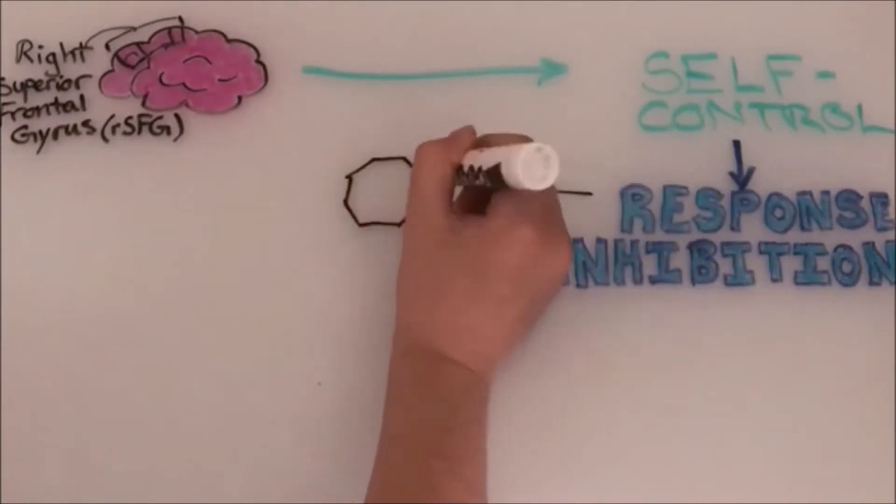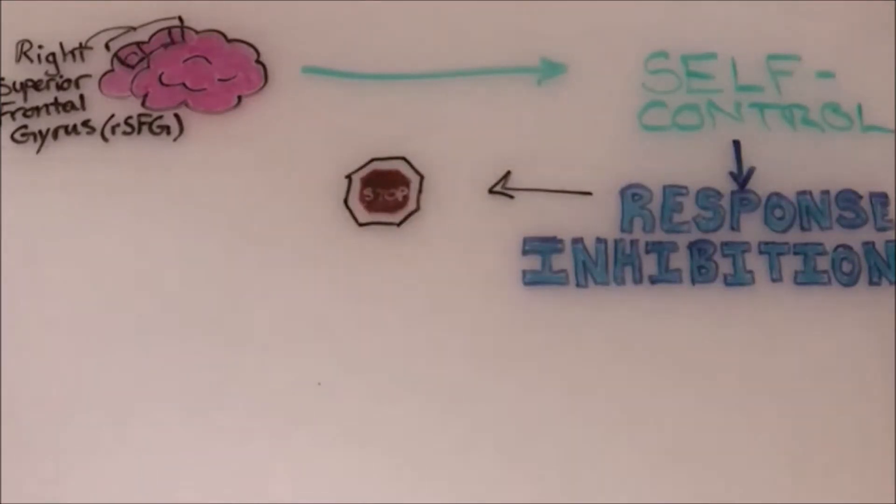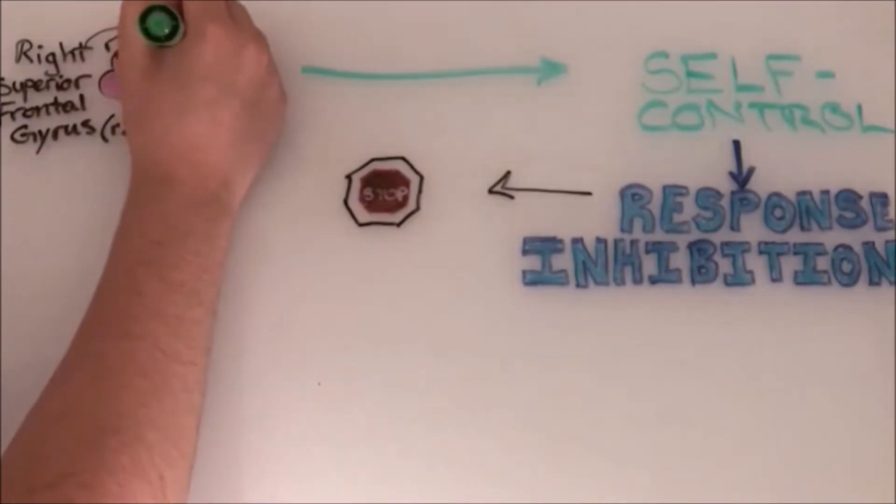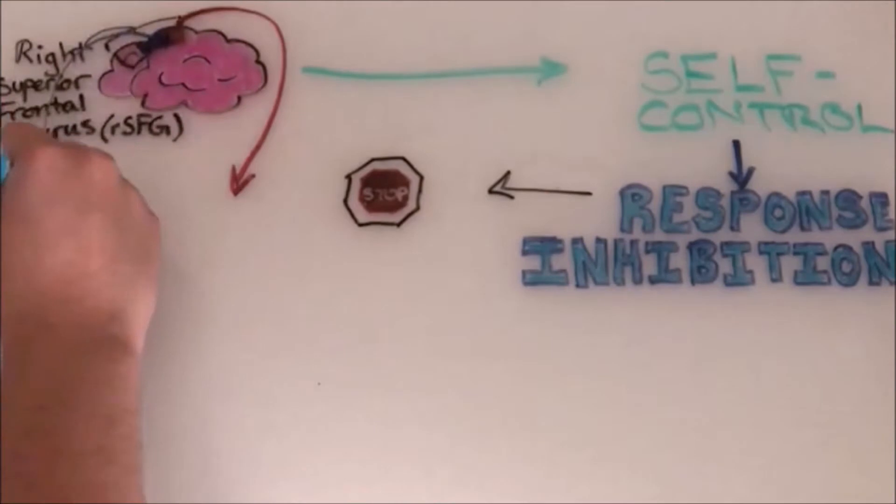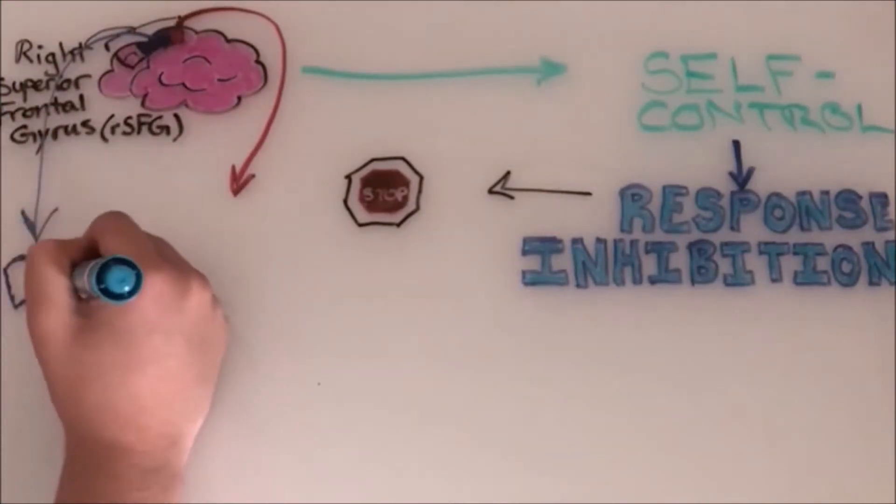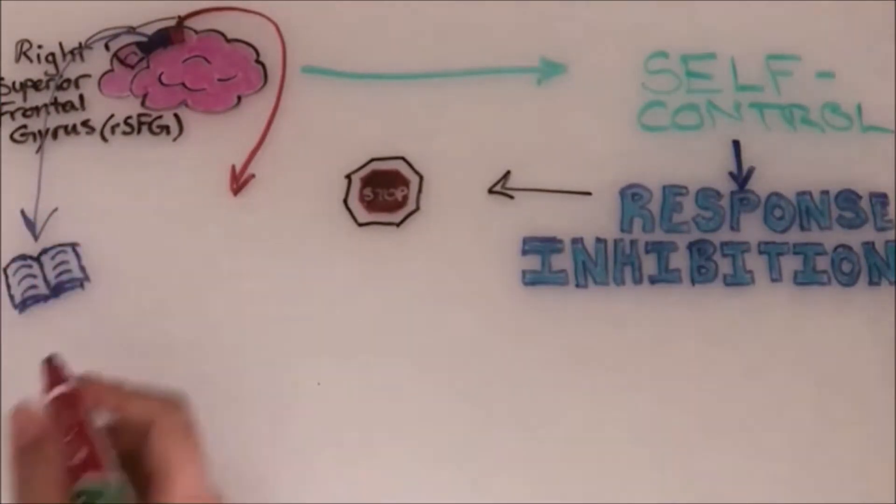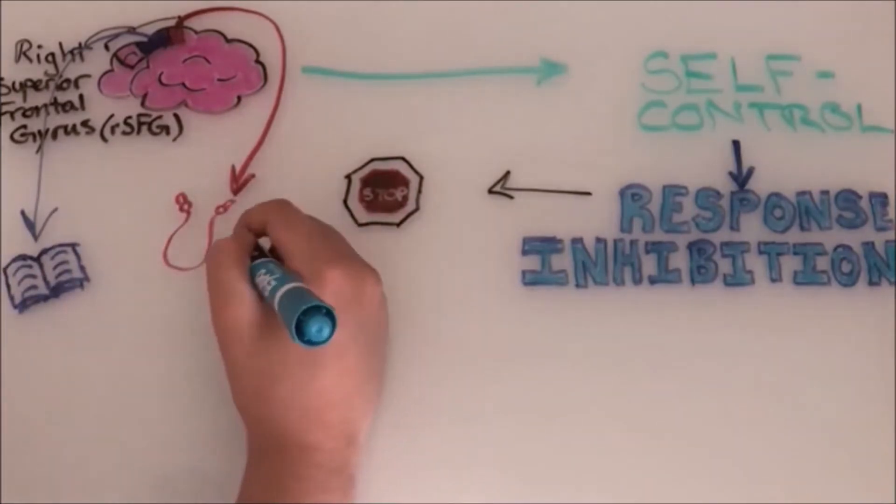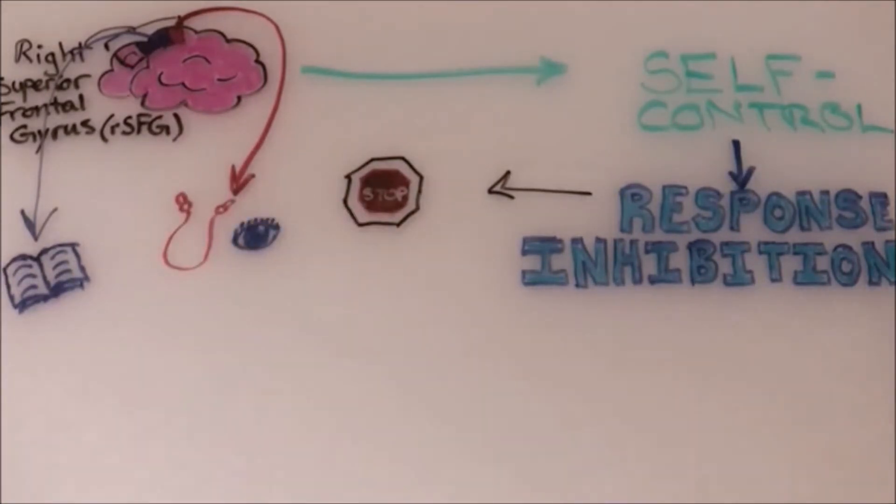There are two parts of the RSFG that may help put a convenient stop to these instincts, and as far as we know it might just be these two parts. This part runs the mental parts of response inhibition, so what you think to stop your instincts, while this part runs with your senses and movements to stop your instincts.